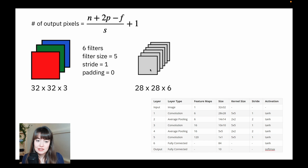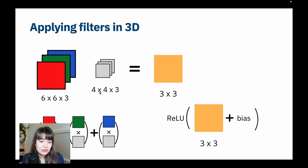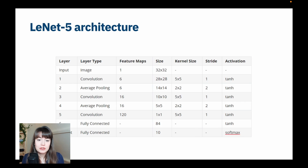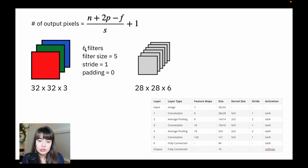So why six layers? Because as we said, every time we apply a 3D filter to a 3D image, when you apply one filter you get one resulting output. If you apply two filters of size four by four, you get two layers as a resulting output. So that's why here, when we apply six filters, we get six layers.